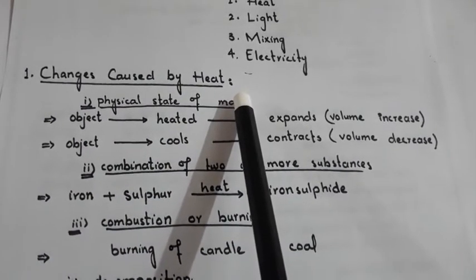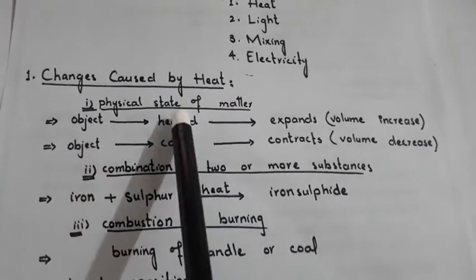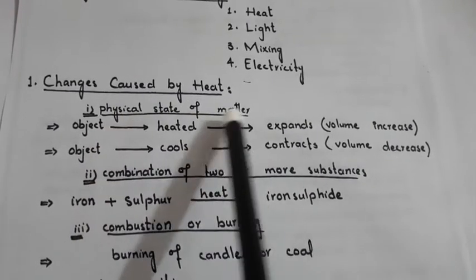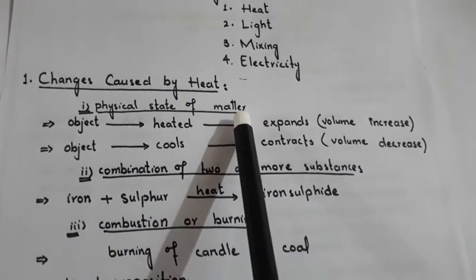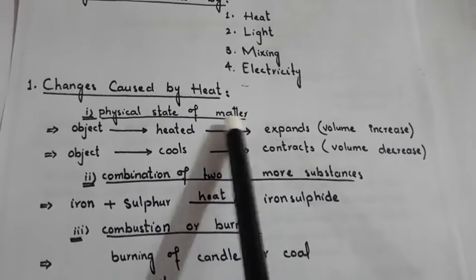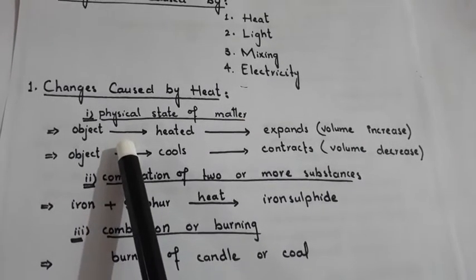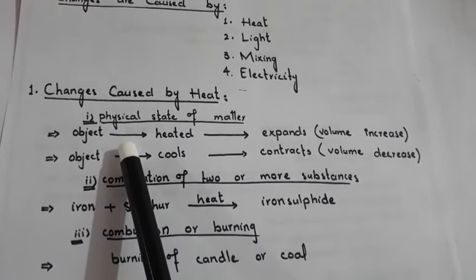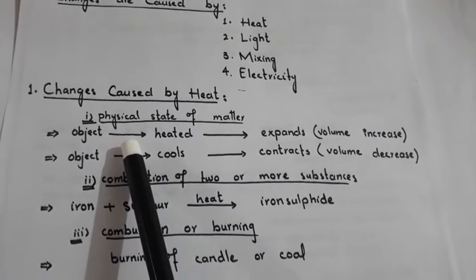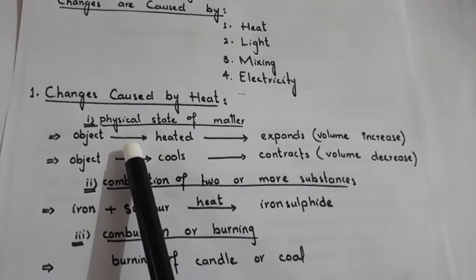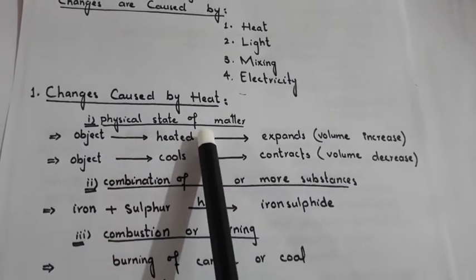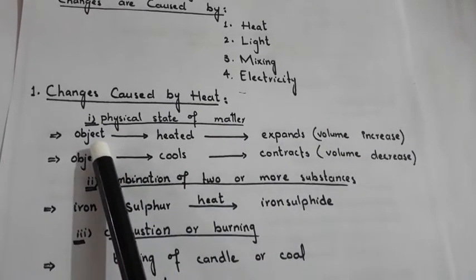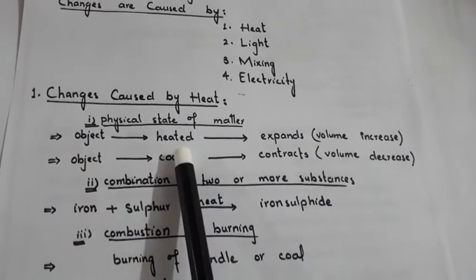Heat can produce many changes in a substance. First, heat can change the physical state of matter. For example, when you put ice on your palm it melts — this is because your hand has heat, and the ice absorbs that heat and melts. So ice converting into water is a physical state change of matter.